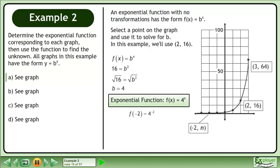The exponential function is f equals 4 to the power of x. Plug in negative 2. 4 to the power of negative 2 equals 1 over 4 squared. The value of n is 1 over 16.